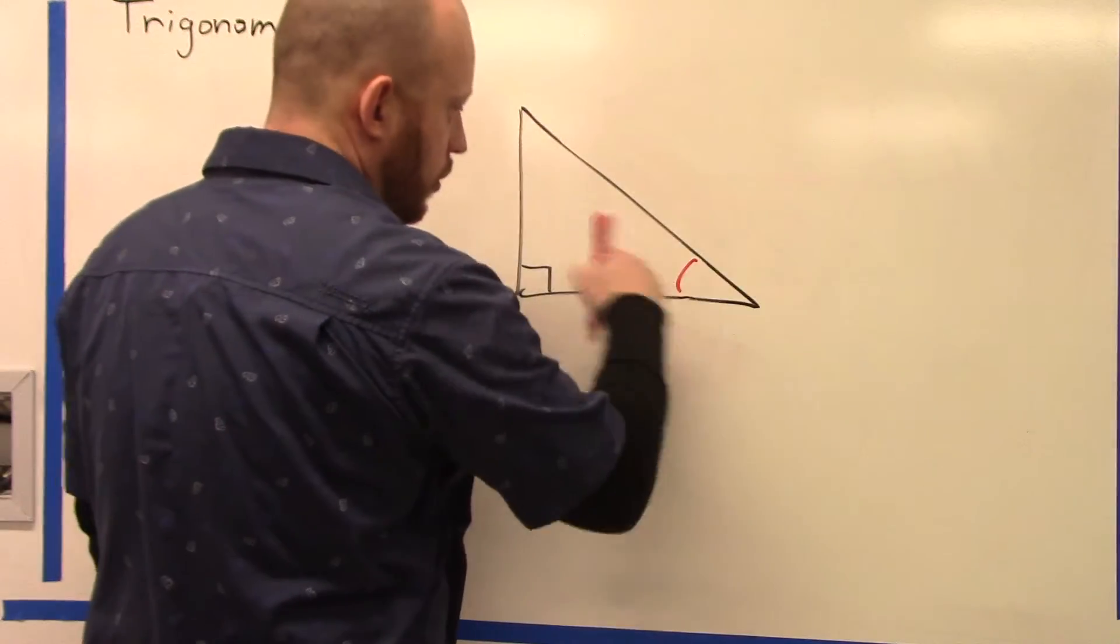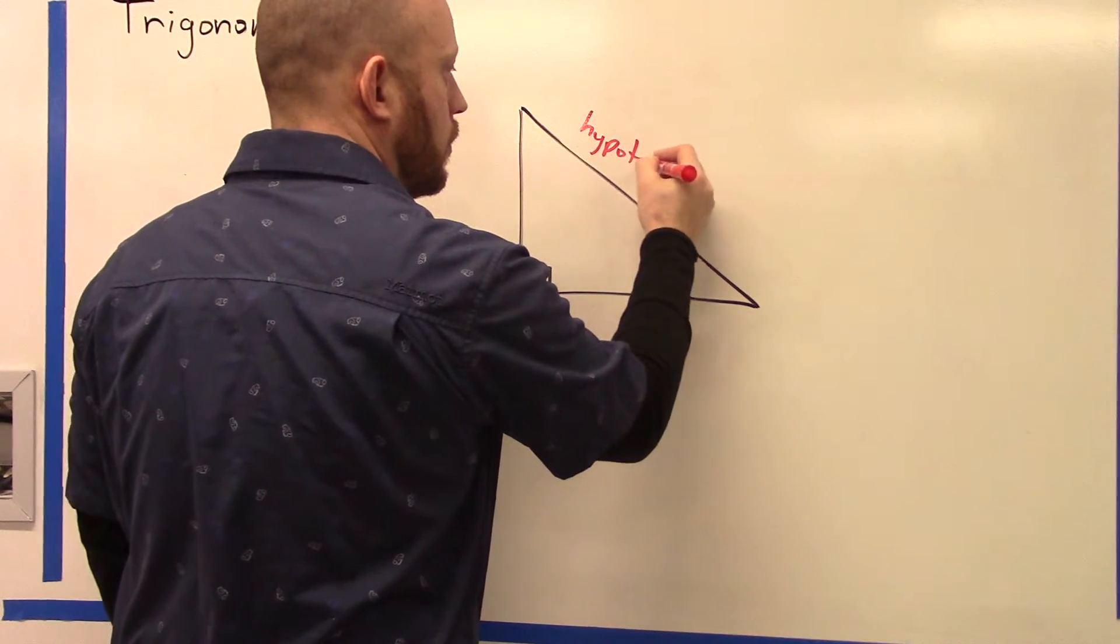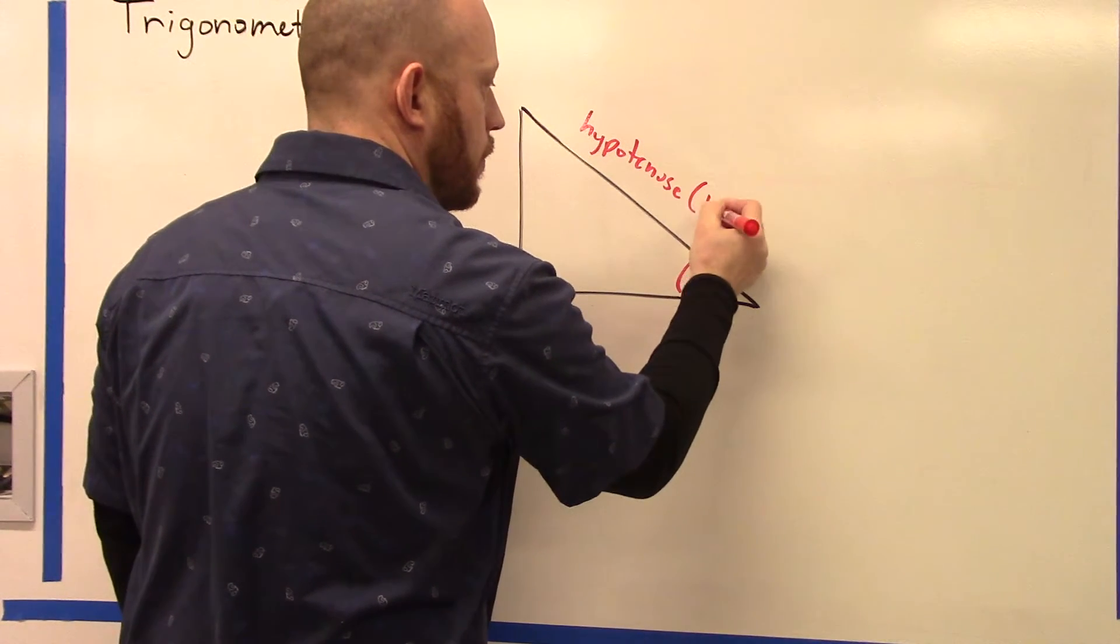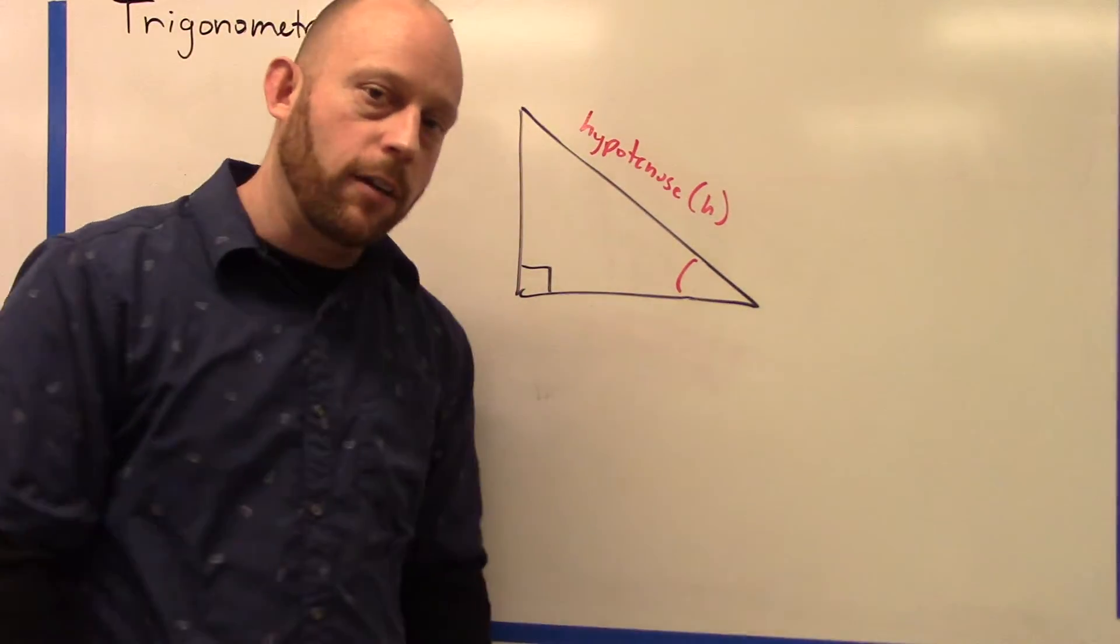The longest leg straight across from the 90-degree angle is always the hypotenuse. Then the way you find adjacent is it has to be the other leg of the angle.